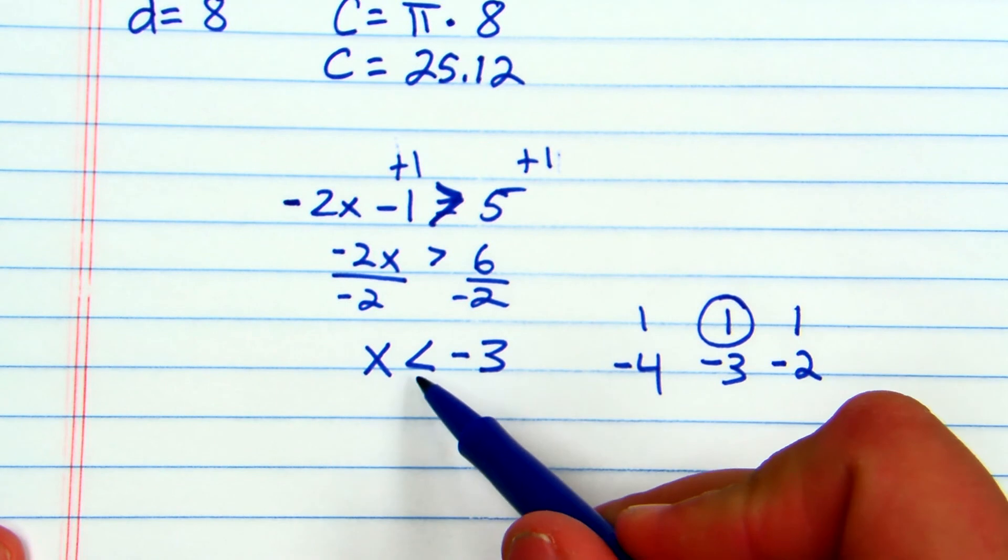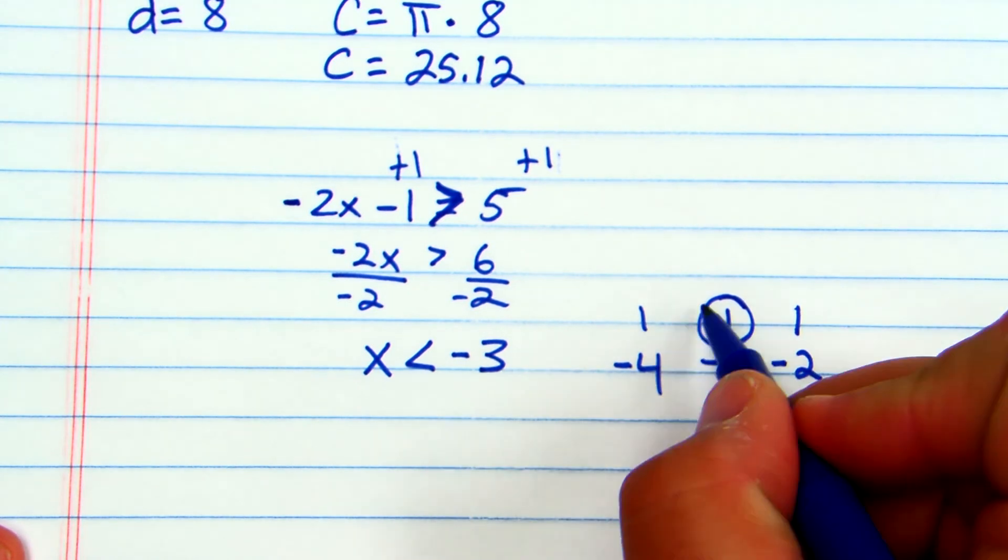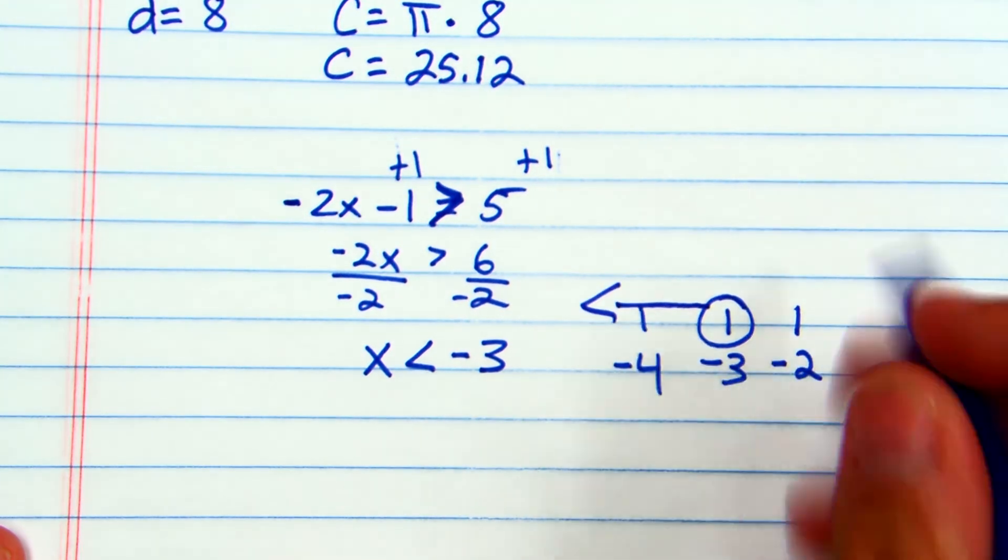I will not fill it in because it's not or equal to. If that had a line under it, I would fill it in. Simply now just draw to the left, and that's my answer graph.